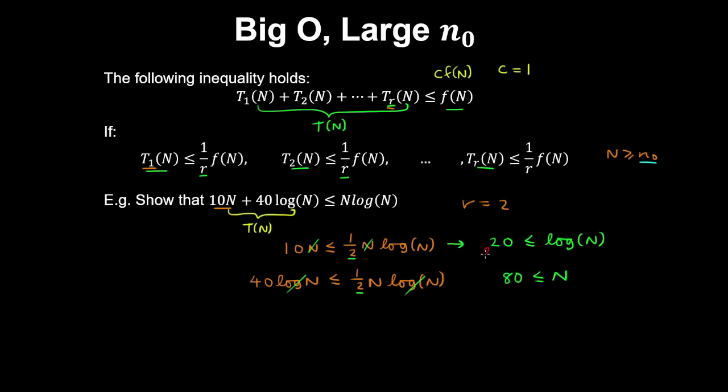So if we take 2 to the power of both sides of this expression, that further gives 2²⁰ is less than or equal to N. So taking the larger of the two, an N value that's greater than or equal to 2²⁰, where we use c equals 1, satisfies this inequality.